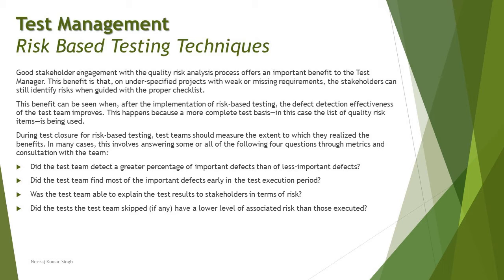During the test closure of the risk-based testing, test teams should measure the extent to which they realize the benefits. Until you measure the effectiveness, you cannot call a process successful. So you must have certain metrics and checklists which will measure the effectiveness of your process - how beneficial your effort and contribution were in order to mitigate or identify those critical risks. In many cases, this involves answering some or all of the following four questions in consultation with the team, using any kind of measurement that makes a real value and impact.